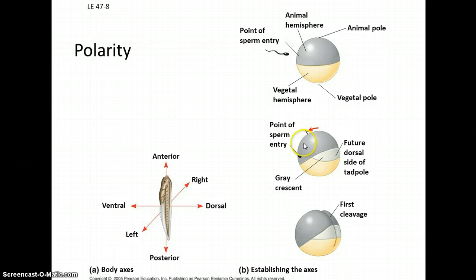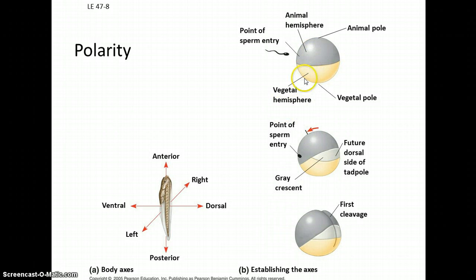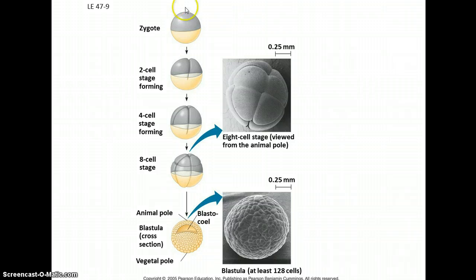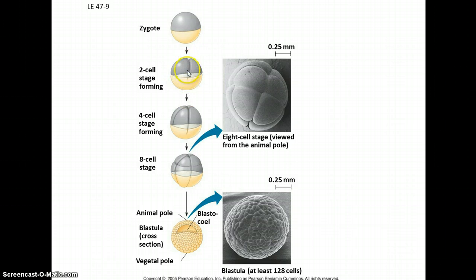One end is called the animal pole and the other — the yellow end — is called the vegetal pole, and the region between them is the gray crescent. Even at the zygote stage, the animal pole will develop into the anterior end and the vegetal pole into the posterior end, while the gray crescent will develop into the dorsal or backside of the organism. Cleavage occurs in a particular way to split the cell into two, each containing some of the animal pole, vegetal pole, and gray crescent in relatively equal amounts — two cells with essentially the same cytoplasmic determinants.